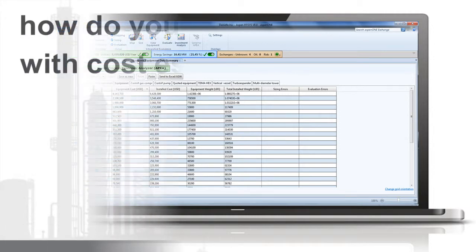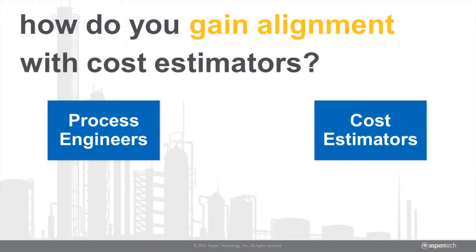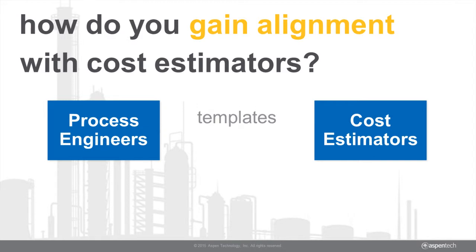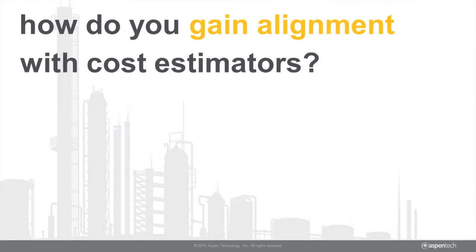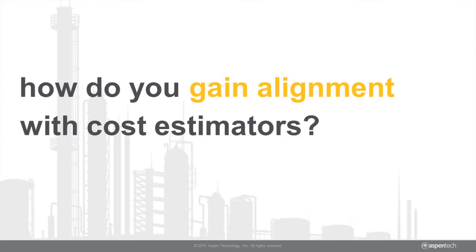So how do you gain alignment with cost estimators? Activated Economics allows you to incorporate your company's historical project data and design standards into templates. When it's time to get a more accurate cost estimate, you can pass the automatically created IZP file to the estimator, which includes the sized equipment list with materials of construction, eliminating a lot of manual data transfer. And because Activated Economics uses the same underlying technology as Aspen Capital Cost Estimator and Aspen In-Plant Cost Estimator, you'll get consistent results and can ensure you're using a standardized cost basis.